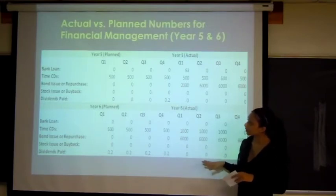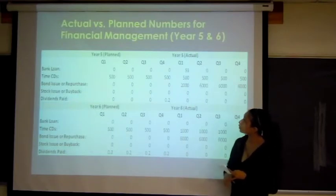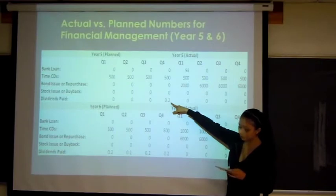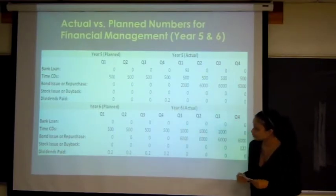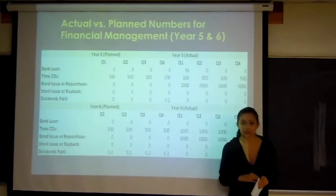Finally, we're going to look at our dividends paid. We plan to issue dividends the last quarter of year 5, which is quarter 4. We plan to issue 20 cents per share. However, due to the fact that we did have low sales and low revenue, we thought it would be better to reinvest all of our funds back into the company in order to increase our capital and revenues.